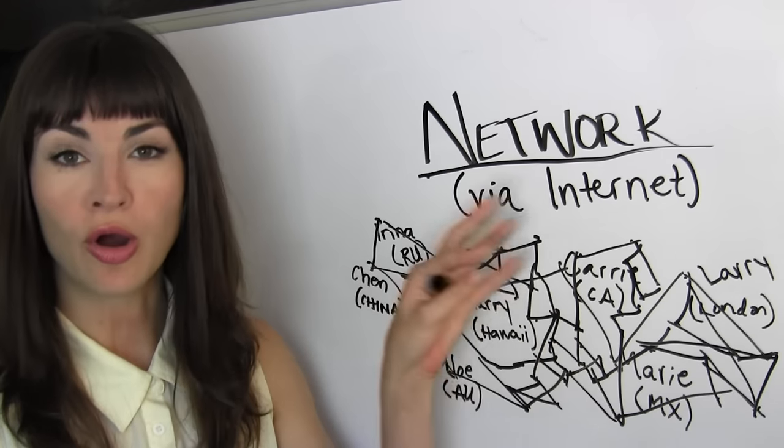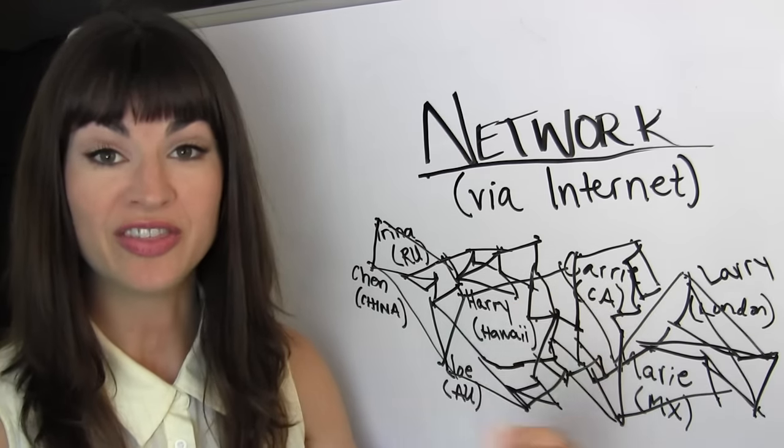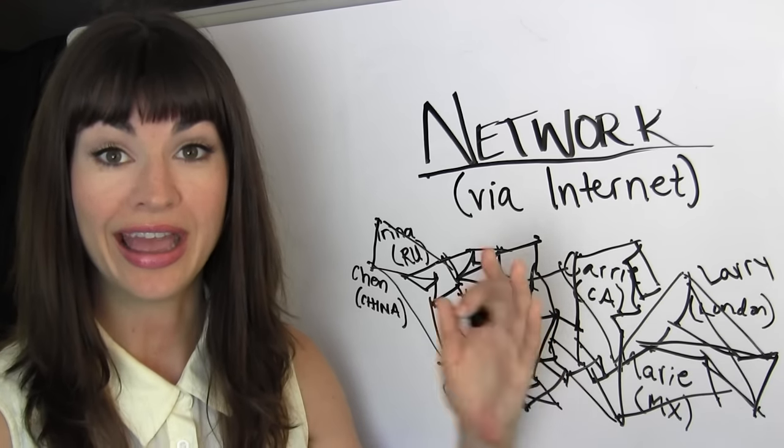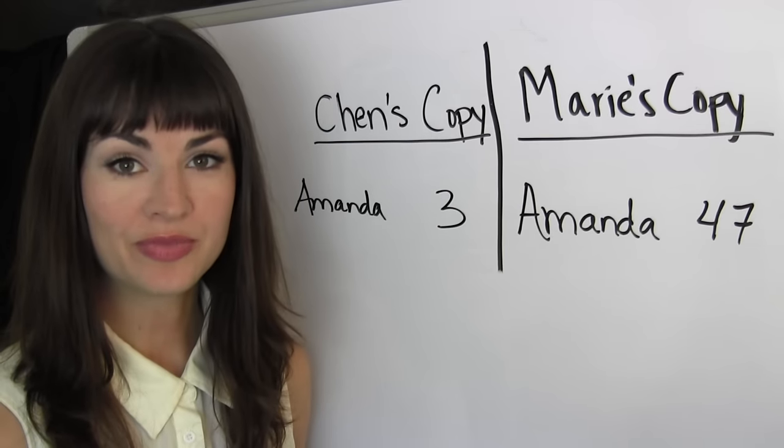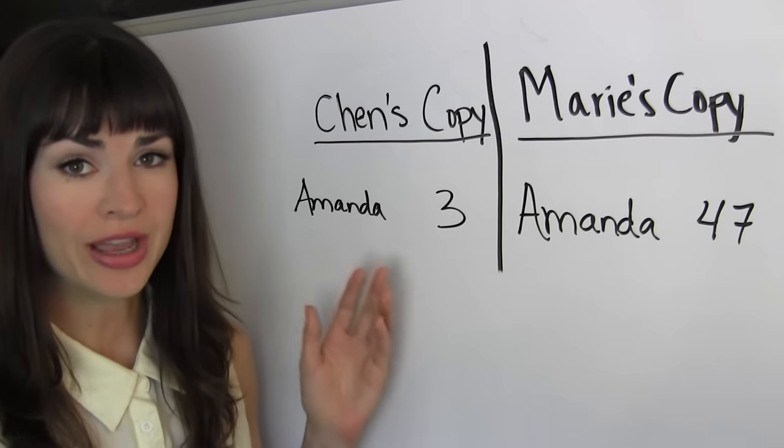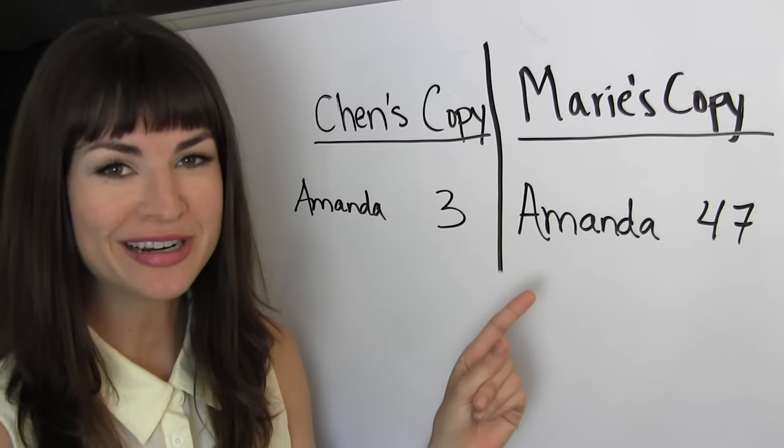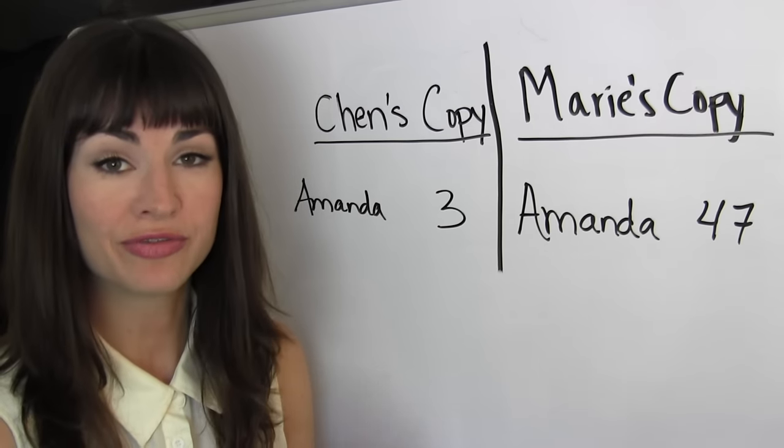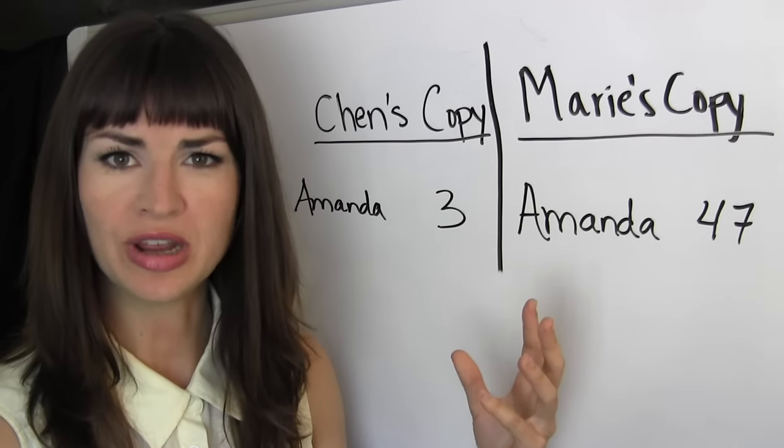And the purpose of this network is for all participants with a copy of the blockchain to agree on the state of that blockchain at any given time. For example, a situation like this in which Chen's copy of the blockchain reports that I have three e-moneys, but Marie's copy reports that I have 47 would cause total chaos and would be of no use to anybody whatsoever.